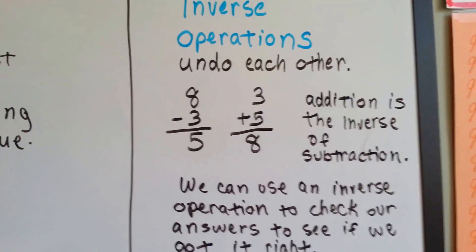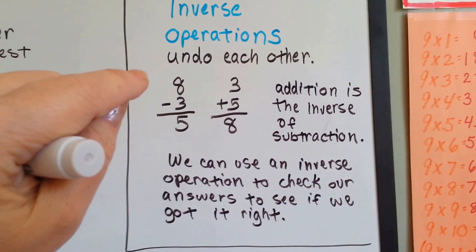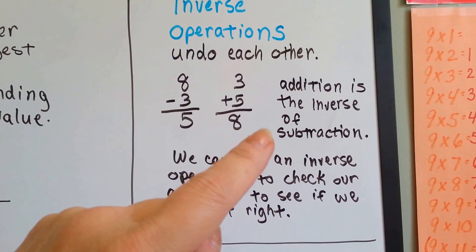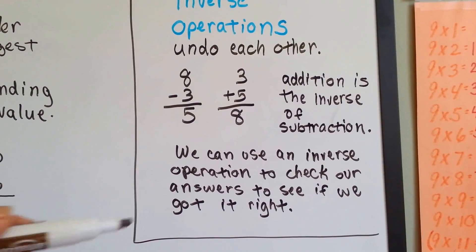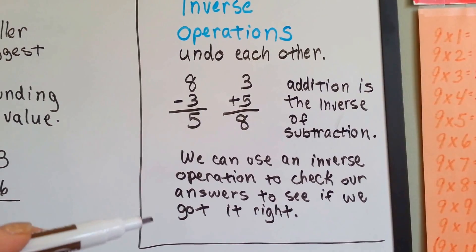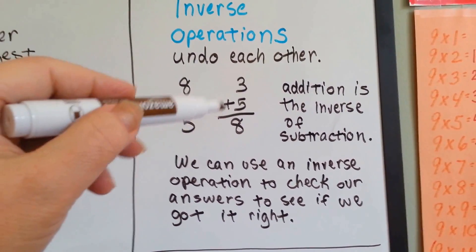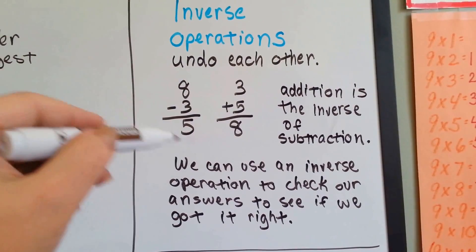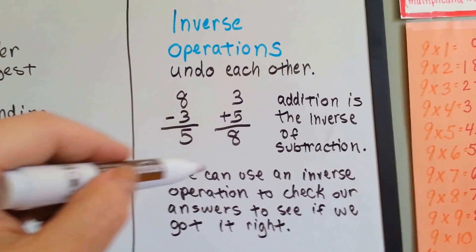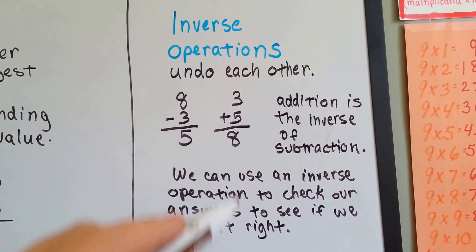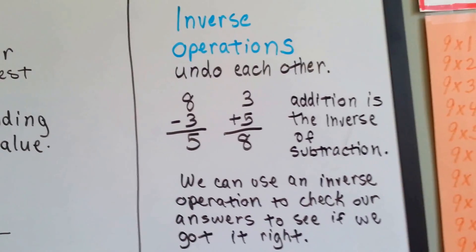So, here's another thing I want to make sure you remember. Inverse operations undo each other. Addition is the inverse of subtraction and subtraction is the inverse of addition. We can use the inverse operation to check our answer to see if we got it right. 8 take away 3 is 5. 3 plus 5 is 8. See how it's a fact family? And then we know by adding that we can check to see if we got our subtraction correct. And if the sum, 8, is the same as the minuend, then you know you got it right.